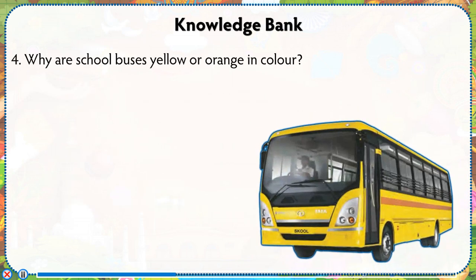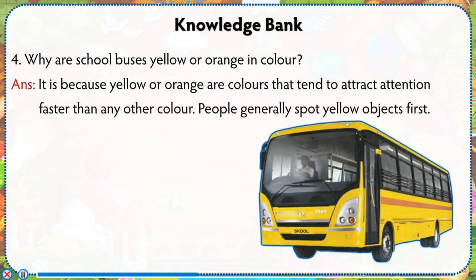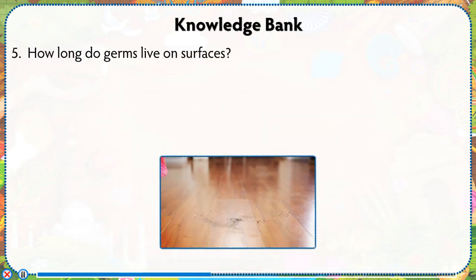Why are school buses yellow or orange in color? Yellow or orange are colors that tend to attract attention faster than any other color. People generally spot yellow objects first.